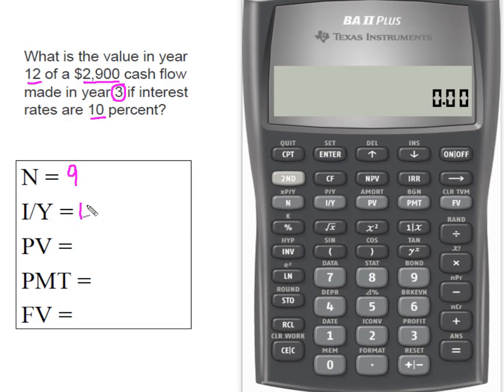Our interest rate is given at 10%, and the present value of the cash flow is this $2,900.